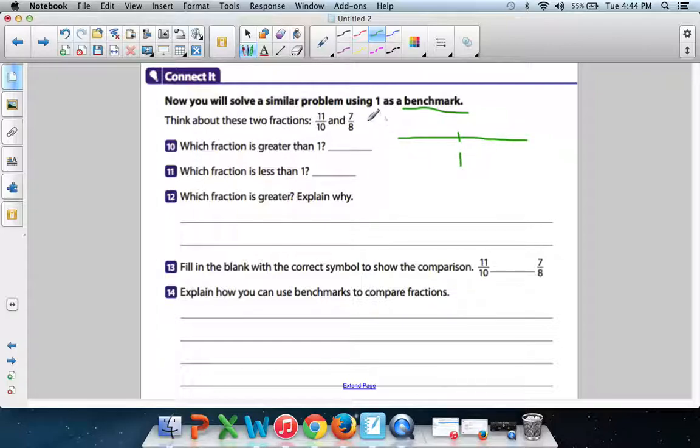Remember, any fraction that has a smaller numerator than denominator, like seven is smaller than eight, that's going to be less than one. Any numerator that's over the denominator, that's bigger than the number on the bottom, that's going to be greater than one. So seven-eighths should be somewhere over here. And 11 over 10, since the numerator is bigger than the denominator, that should be somewhere over here, somewhere bigger than one.